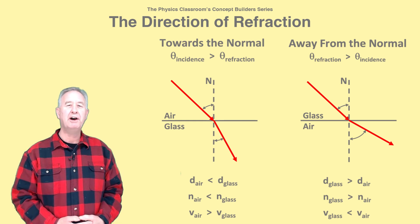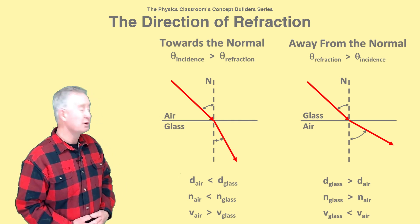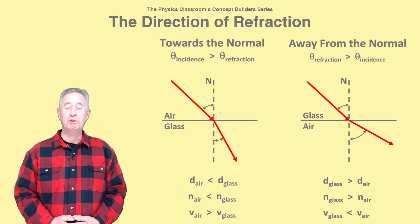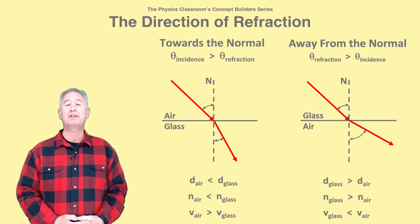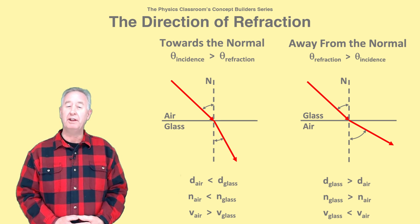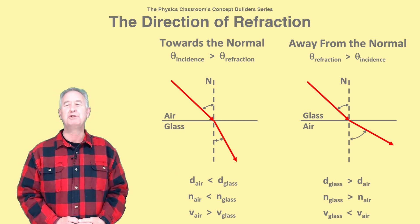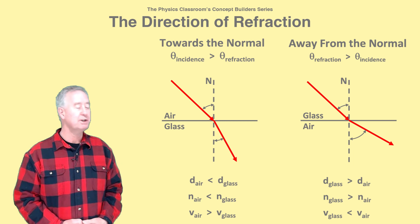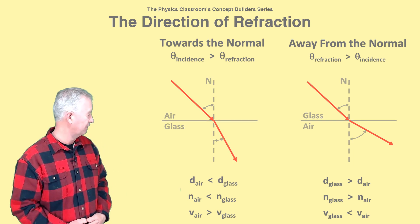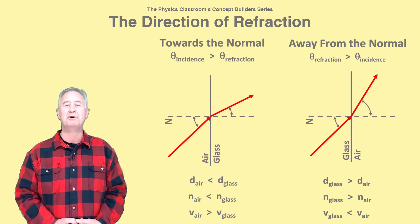So by observing how light refracts at the boundary, either towards or away from the normal line, you can make some predictions about the relative speed, optical density, or index of refraction of the two media. The rules will work whether the boundary is horizontal or vertical or oriented in any such direction.